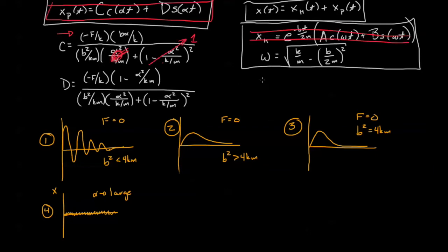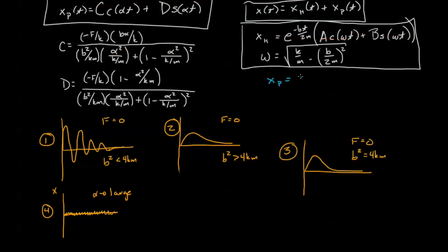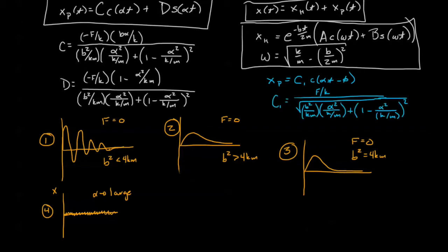Now before we try and figure this out, I'd like to write another form of a particular solution with the sinusoidally varying force. Let's use C1 cosine of alpha t minus phi. So basically we're introducing a sinusoidally varying function with some sort of phase change. And let me write down what C1 equals. So we can see it's still a mess, but we only have to deal with one constant. We're not going to worry about the phase change for now.